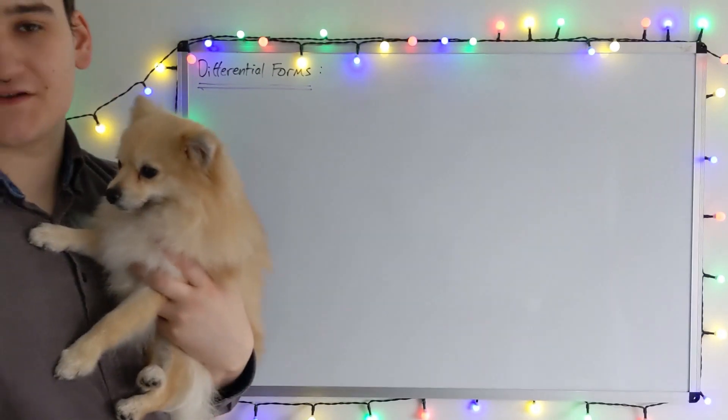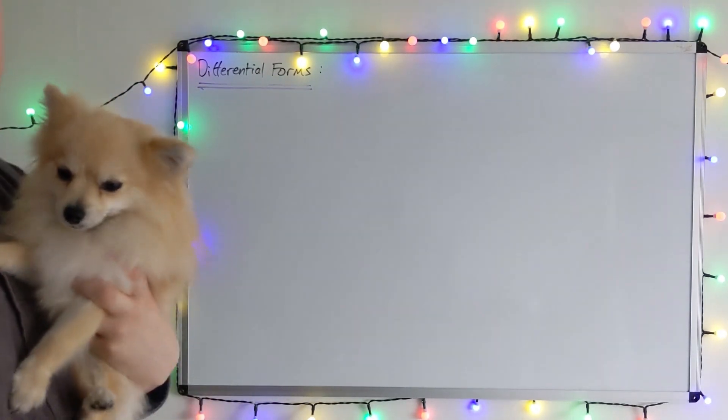Okay, so that was how zero and one forms are defined. Now let's use some of this to construct a two-form.